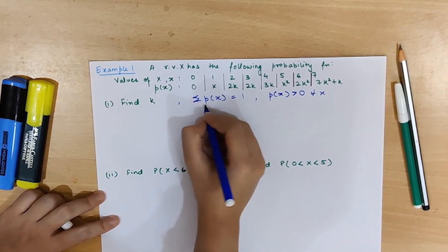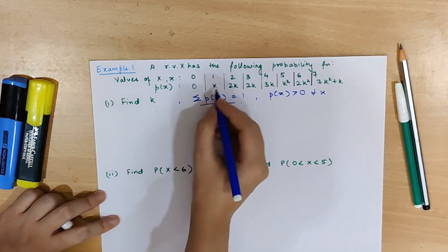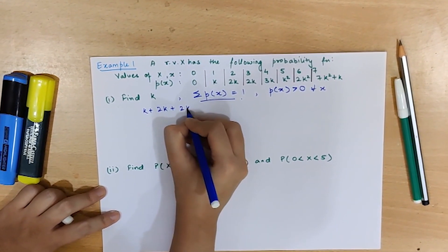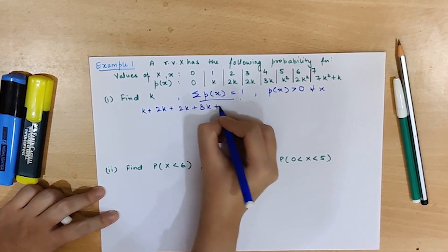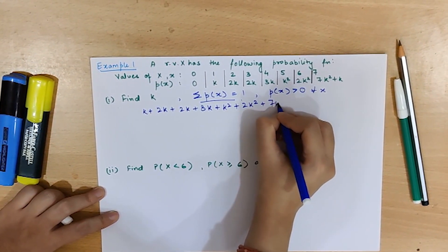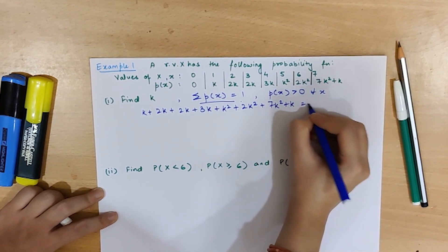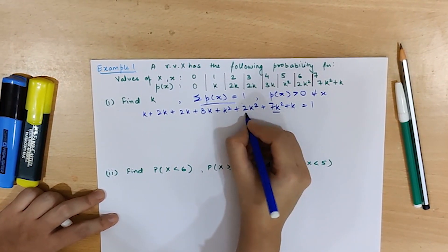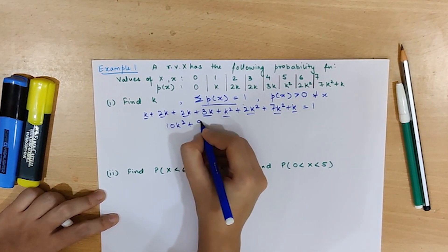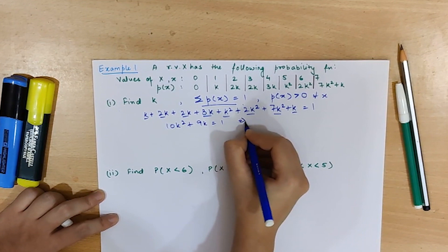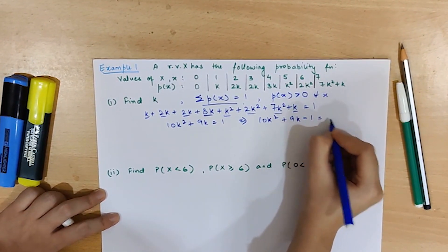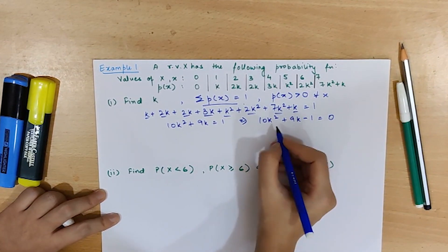Considering the first property that summation of P(x) is equal to 1, we have k + 2k + 2k + 3k + k² + 2k² + 7k² + k equal to 1. This means that 10k² + 9k = 1, which implies 10k² + 9k − 1 = 0.